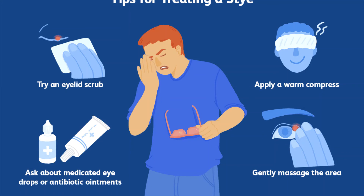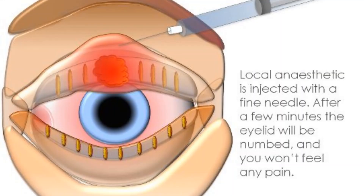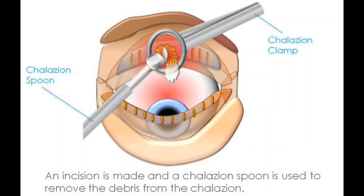Steroid shots — sometimes if your chalazion is very swollen, your doctor may give you a steroid shot (cortisone injection) to reduce the swelling. If these treatments fail, you may need surgery to drain the area. If your stye or chalazion affects vision or does not go away, it may need to be drained, usually done in the doctor's office using local anesthesia. If a stye or chalazion keeps coming back, your doctor may biopsy it — removing a tiny piece of tissue to check for a more serious eye problem.